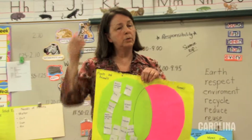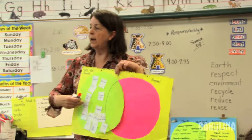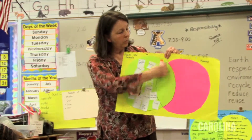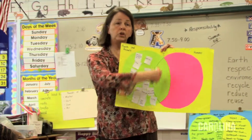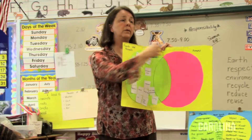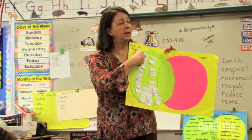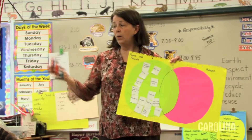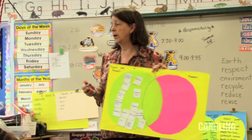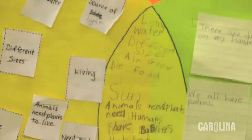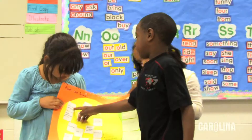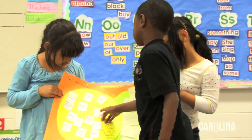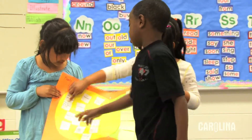We're going to come back over to the floor, and you're going to share back and tell the group what we share in common with other animals and plants. They had to explain why they chose what they did to go in different parts of the Venn diagrams. Live inside and outside, different sizes, and then living.